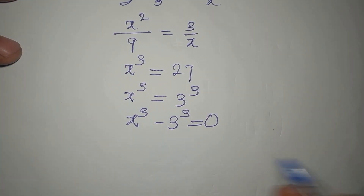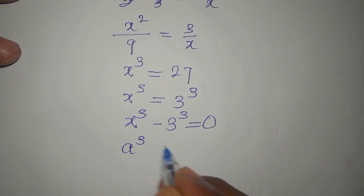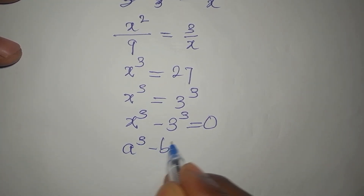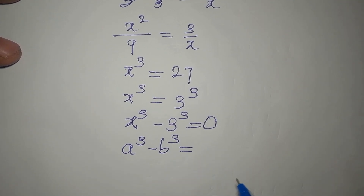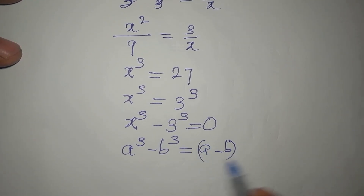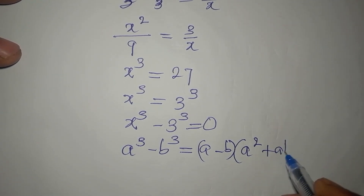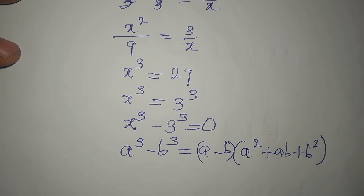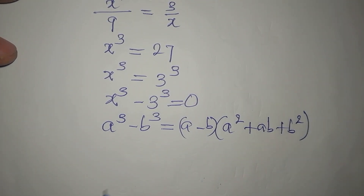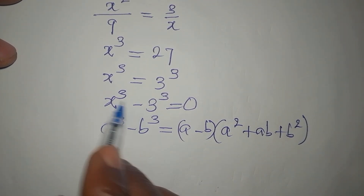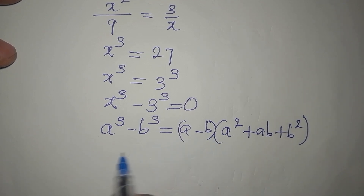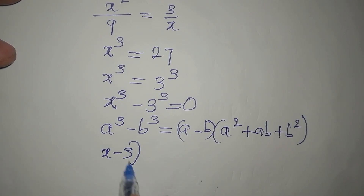Here we have difference of two cubes. Your a to the power of 3 minus b to the power of 3 is equal to a minus b, into a squared plus ab plus b squared. This is what this is. To write this in this form, a minus b becomes x minus 3.